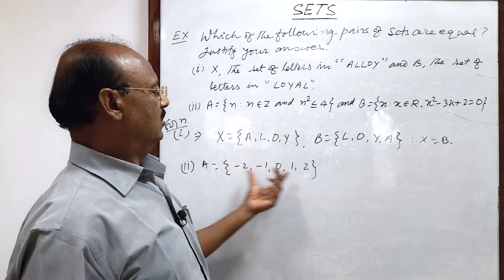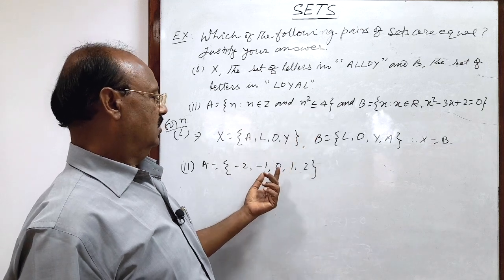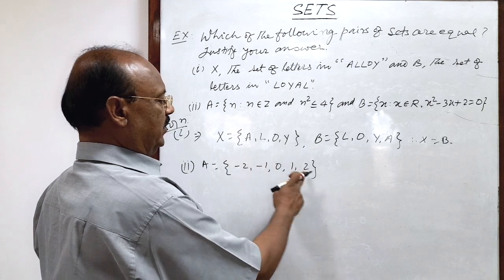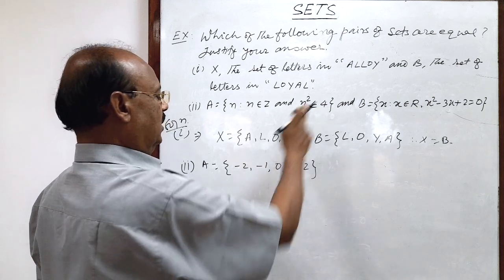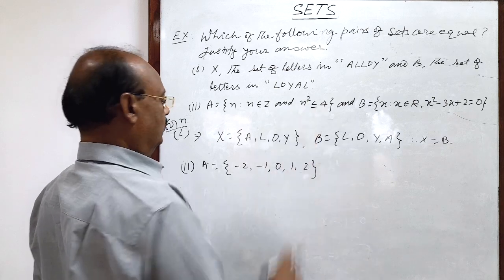These numbers will be -2, -1, 0, 1, and 2. Squares of all these numbers are either 4 or less than 4. Squares of -2 and 2 are 4, equal to 4, and squares of -1, 0, and 1 are smaller than 4. So these are the members, these are the elements of set A.